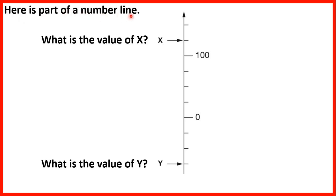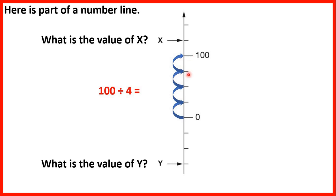Here is part of a number line. What is the value of x? We need to work out what the little lines on our number line represent. We have 0 and 100 marked, and to get from 0 to 100 we have 4 lines. So if we divide 100 by 4, that tells us each line represents 25 more as we go up. So the value of x will be 25 more than 100, which is 125.